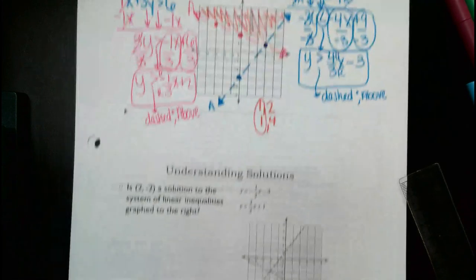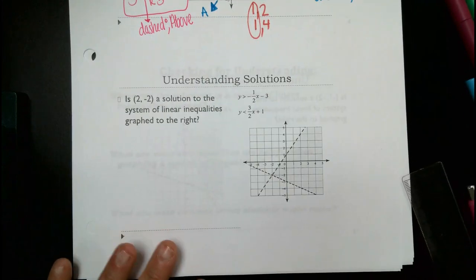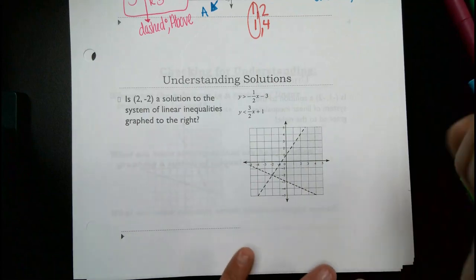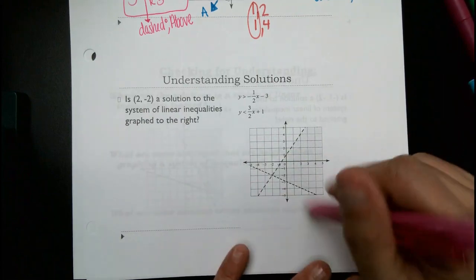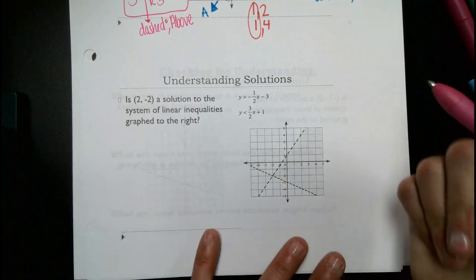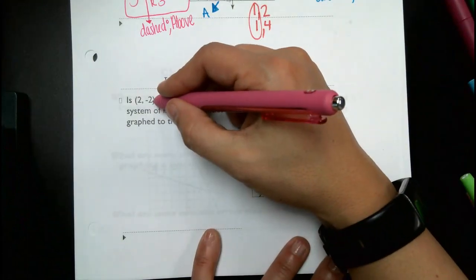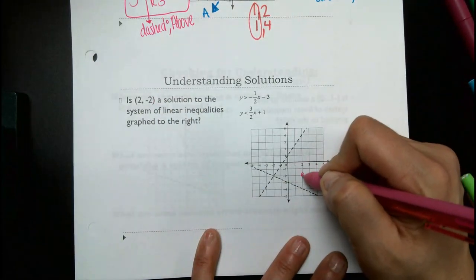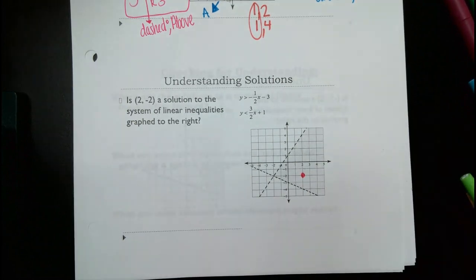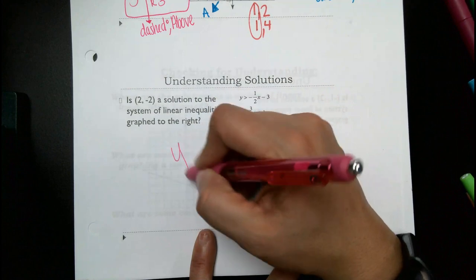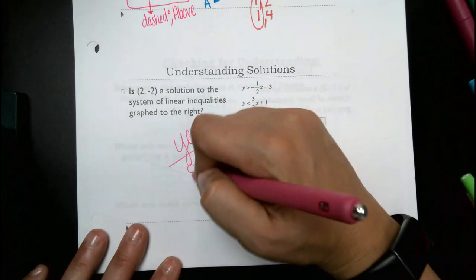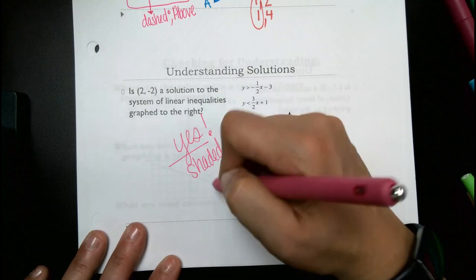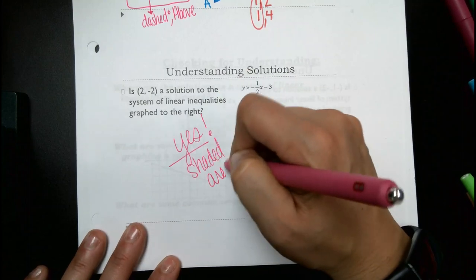Down here at the bottom, let's plot these points and see if they fall in the shaded section. Two, comma, negative two — is that in the shaded section? Yes. So is it a solution? Yes, because it is in the shaded area.